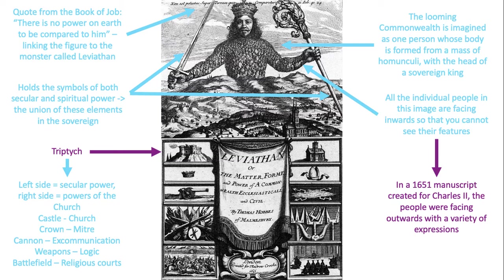All of the individual people in this image are facing inwards so that you cannot see their features. In a 1651 manuscript created for Charles II, the people were facing outwards with a variety of expressions. So this is almost further dehumanising them — they're turning inwards, facing into the commonwealth, almost not people with their own faces apart from the sovereign.